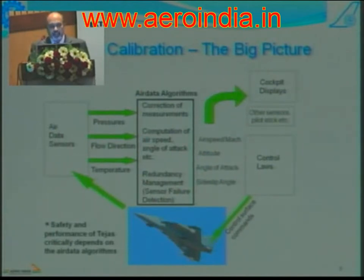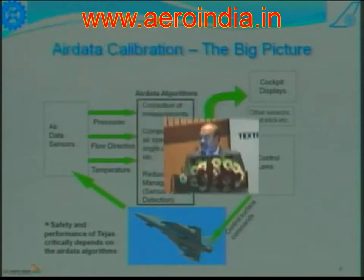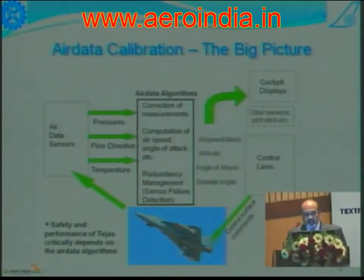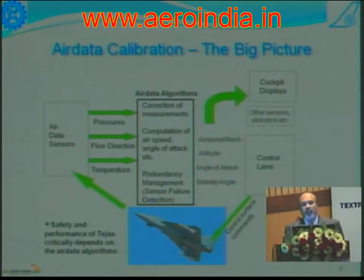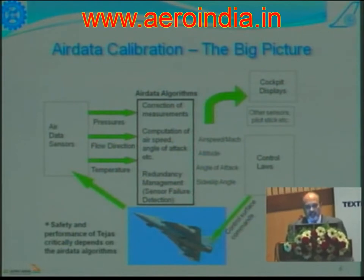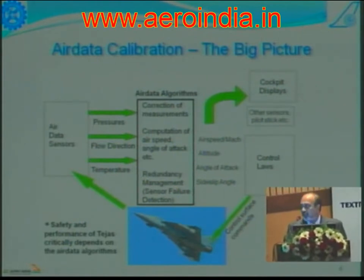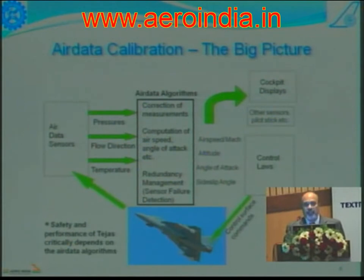Coming to air data calibration — what is it that is so challenging in designing a robust and reliable air data system? For an aircraft of this nature, the variation of the local parameters is significant because the sensors, unlike the inertial sensors like accelerometers and rate gyros, do not give you the measurements you want. They give what are known as the local parameters, and from these — be it the flow angles, static pressure, or total pressure — one needs to get the free stream values. Depending on how well you have located your sensors, these conversions from local to free stream are highly nonlinear and functions of the variables they themselves measure, like the Mach number and angle of attack.